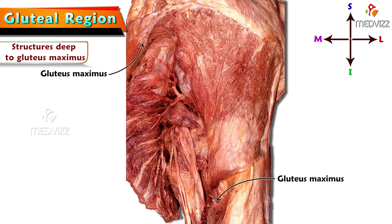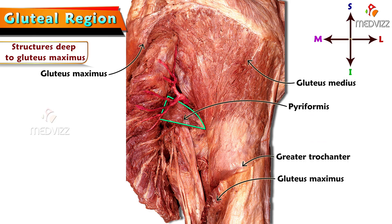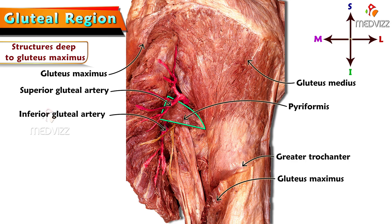The large fan-shaped muscle converging towards and inserting into the greater trochanter is the gluteus medius. A small piriform-shaped, i.e. pyramidal or triangular, muscle is the piriformis. Piriformis is the key muscle of the gluteal region as it divides the structures above and below it. The artery peeping out along the upper border of the piriformis is the superior gluteal artery, and the artery below the piriformis is the inferior gluteal artery.